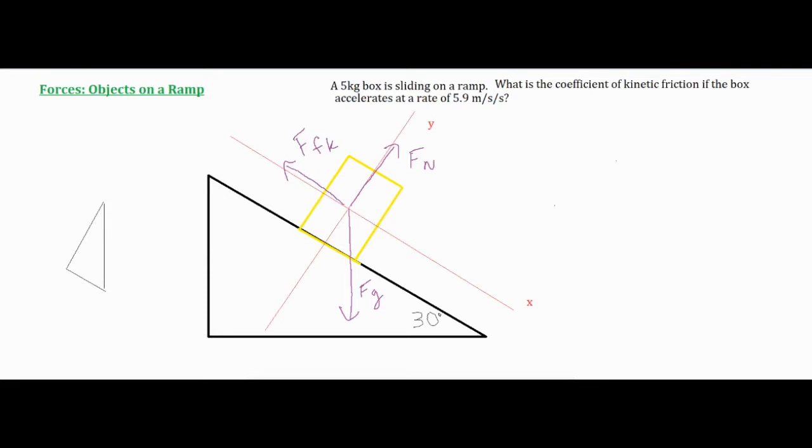When analyzing an object on a ramp one of the big differences you can probably see already in red is that the x and y axis is tilted on angle.